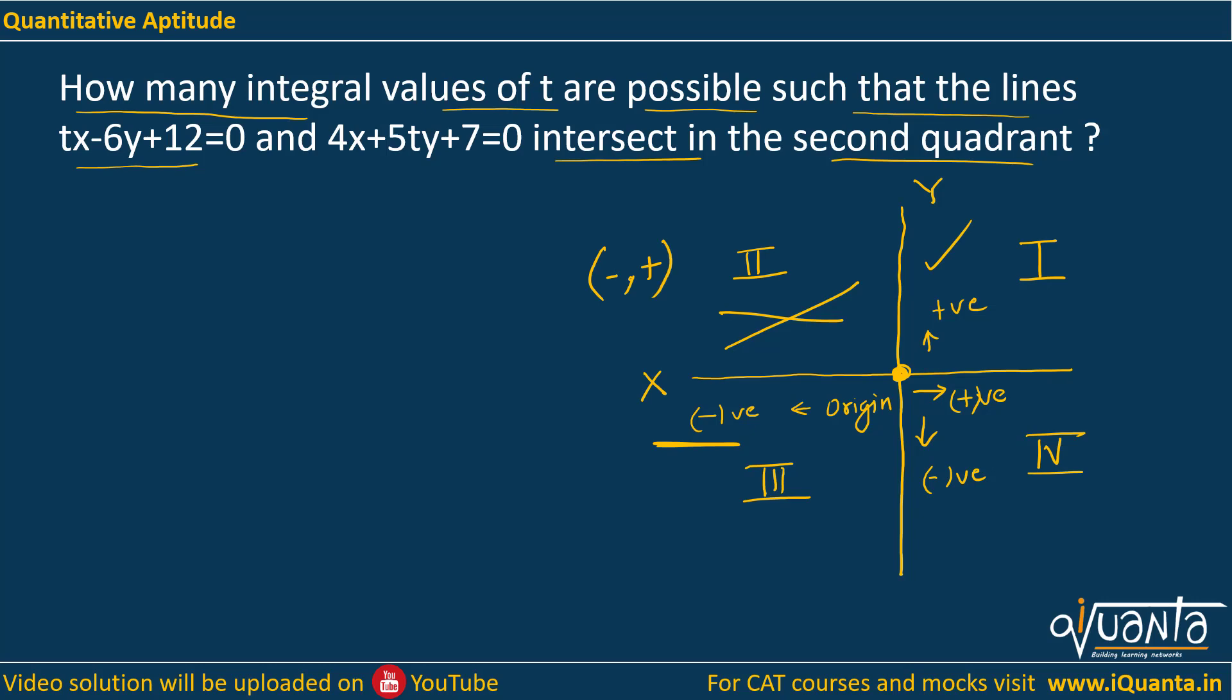Since these lines are intersecting in the second quadrant, we need to find out their point of intersection. We will be solving these equations for x and y. So we have tx-6y=-12 and 4x+5ty=-7.